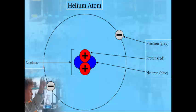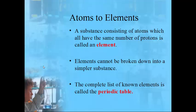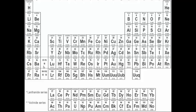The number of these particles will vary depending on the element. A substance whose atoms all have exactly the same number of protons is called an element. Elements are the simplest things in chemistry — you can't break them down further. A mass of carbon, for example, will only ever give you smaller bits of carbon. The complete list of all known elements is called the periodic table.